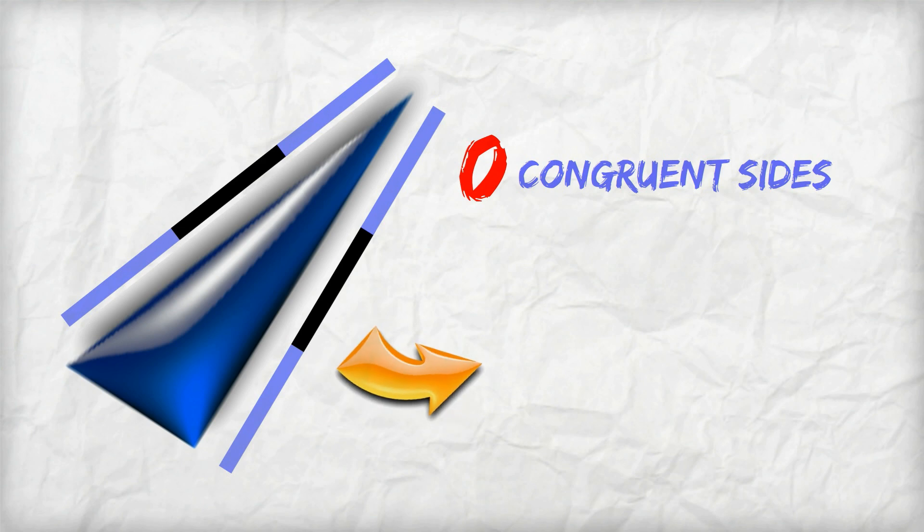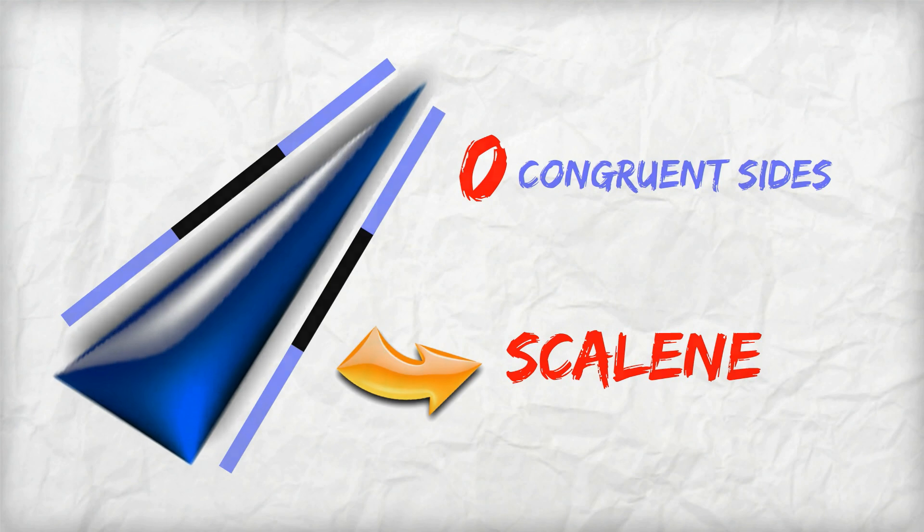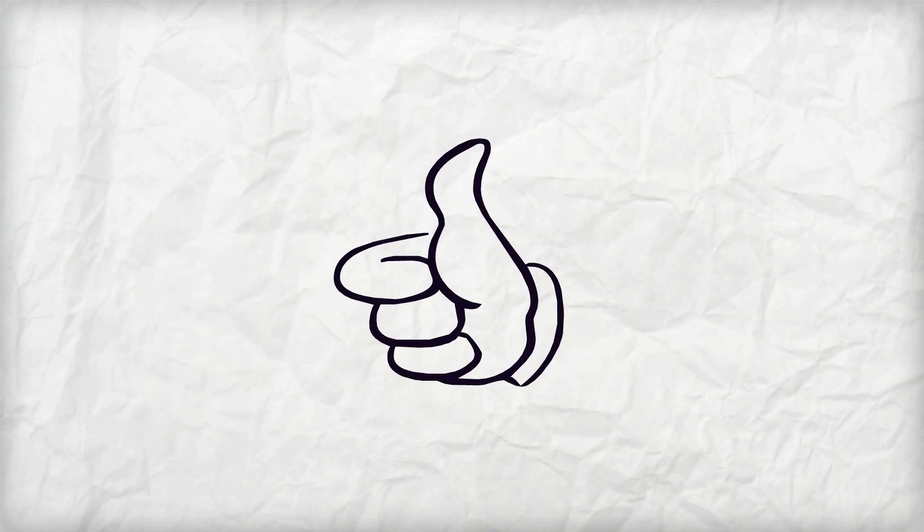Has this triangle got any sides of the same length? The ruler shows you it has zero congruent sides, so it's a scalene triangle. Thumbs up if you got it!